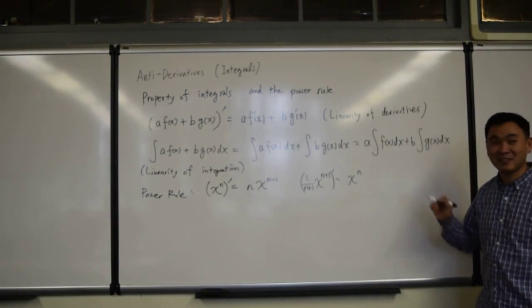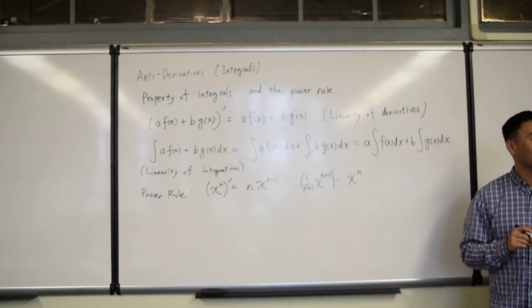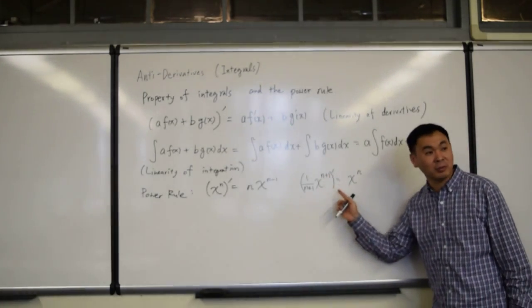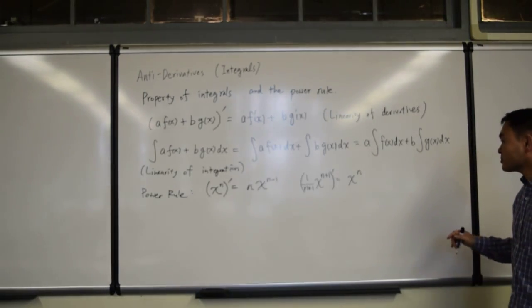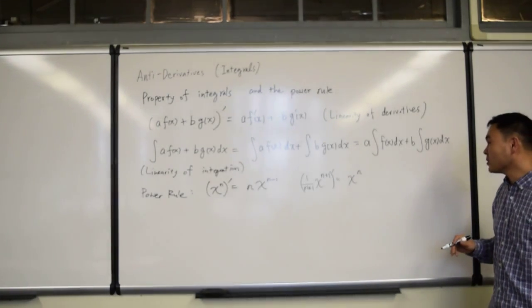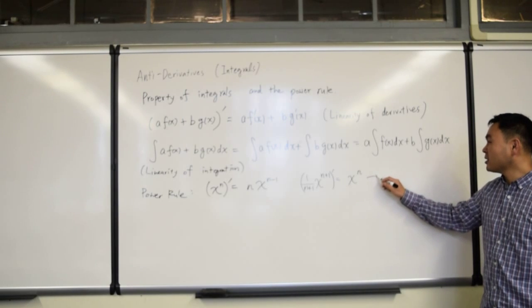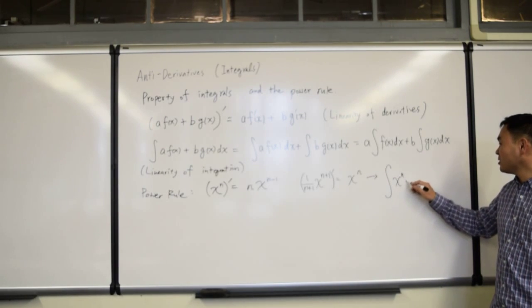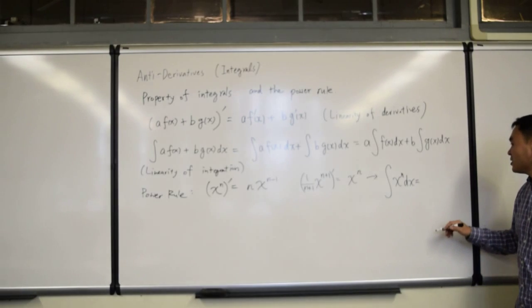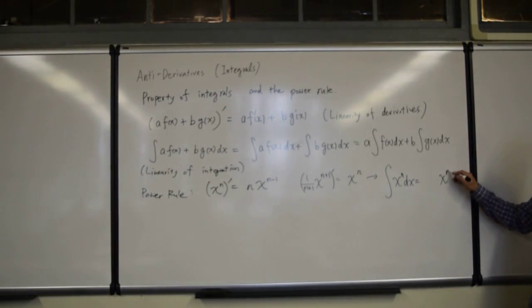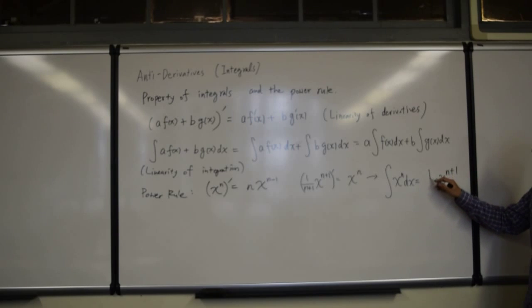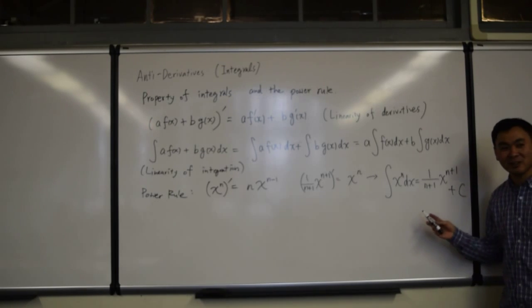Can you actually put it over something? You can also write x to the n plus one over n plus one. That's another way to say it. It's the same thing, algebraically. Now, from this, we know that the integral of x to the n dx is x to the n plus one, and in front, you have to put one over n plus one. And plus c. Don't ever forget plus c. It'll cost you a point, and maybe even more. Don't forget plus c.